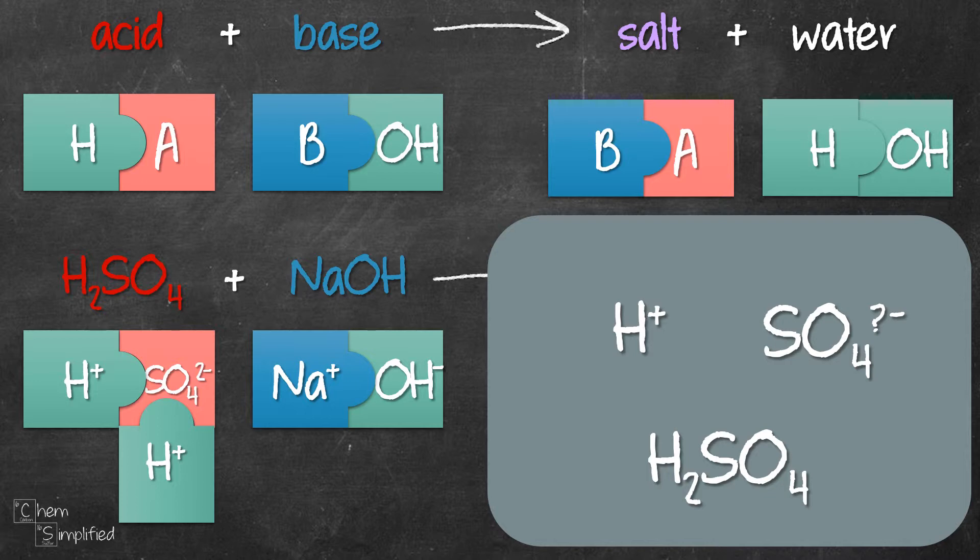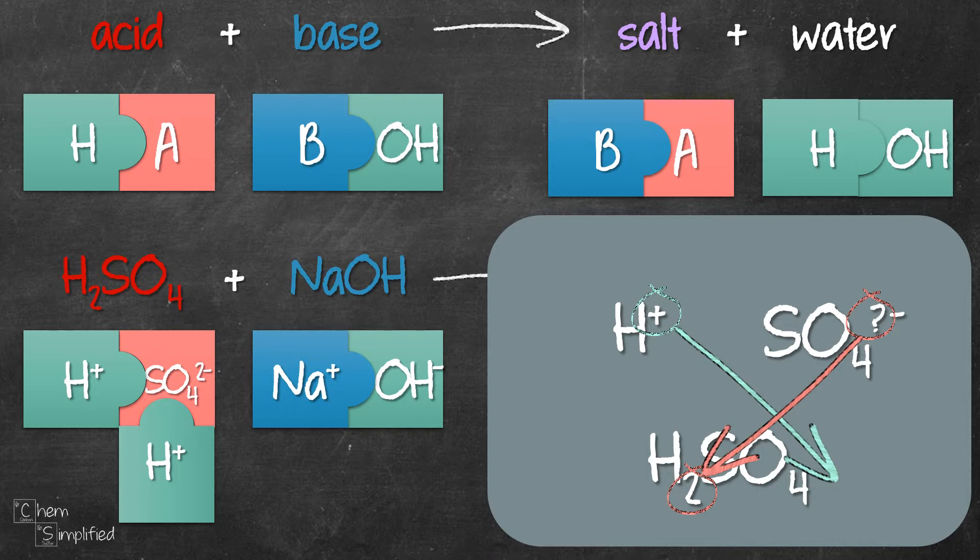The charge on H+ is 1, so we cross 1 over to SO4 and we get 1. As for the charge on SO4, which we don't know is a question mark, we cross it over to H and we see a 2 there. That means the charge for SO4 is 2-. That's how we can figure out the charge of sulfate ion if it's not given or we can't remember.